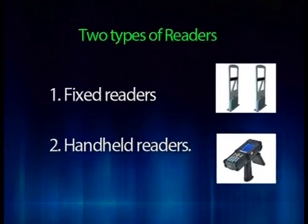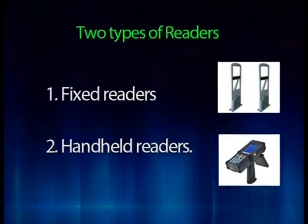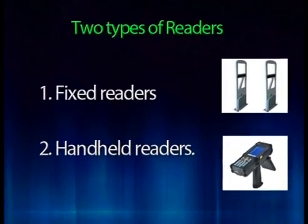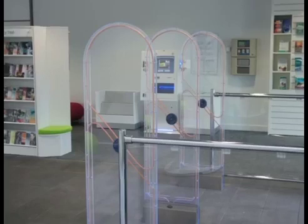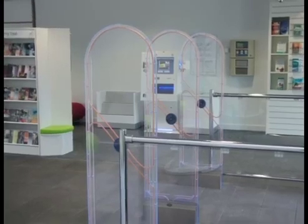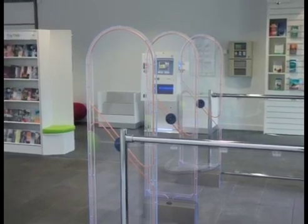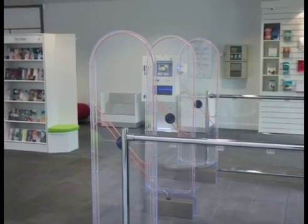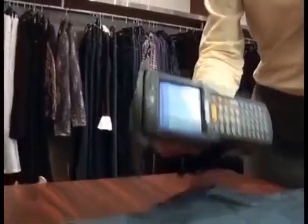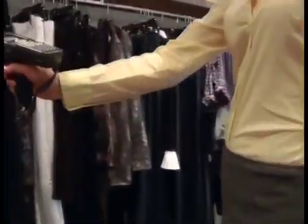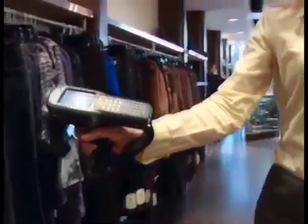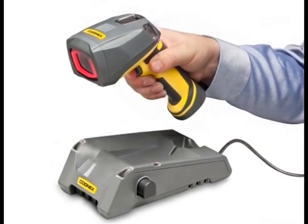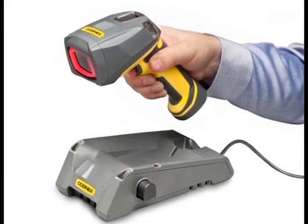There are two types of readers: fixed readers and handheld readers. Fixed readers are of big size and mounted at a fixed location, usually found at library entrances and exits, bay doors, and toll booths. Handheld readers are of small size and portable. An example of a handheld reader includes the reader used at a payment counter at a retail store.